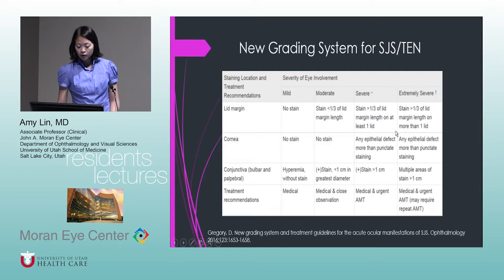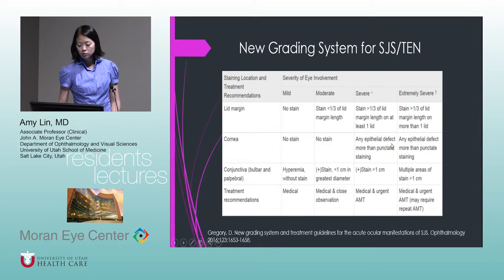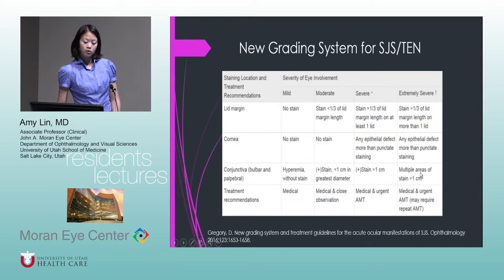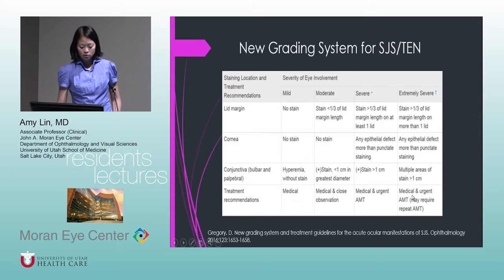For severe and extremely severe, both require urgent amniotic membrane transplants. Severe and extremely severe both involve greater than one-third of a lid margin, and any epithelial defect more than punctate staining automatically puts patients in the severe or extremely severe category. Staining greater than one centimeter is severe; multiple areas of staining greater than one centimeter is extremely severe. Extremely severe may require repeat surgery.